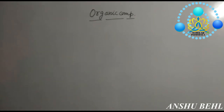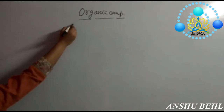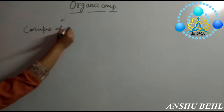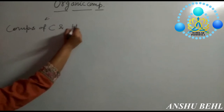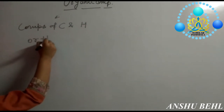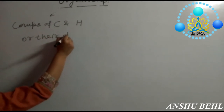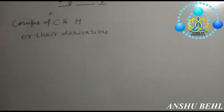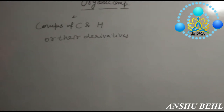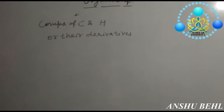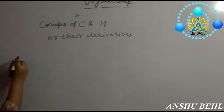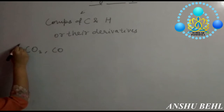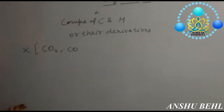So the definition changed. Now, organic compounds are defined as compounds of carbon and hydrogen, or their derivatives. Derivatives may include some heteroatoms like sulfur, oxygen, halogens, etc. Compounds which do not have hydrogen but have carbon, like carbon dioxide and carbon monoxide, are not organic compounds.